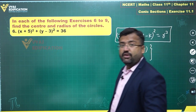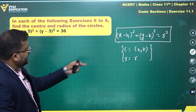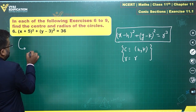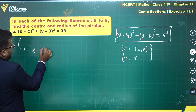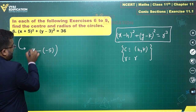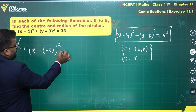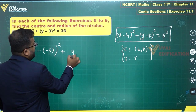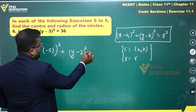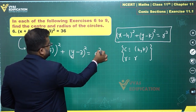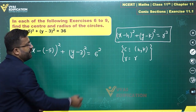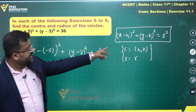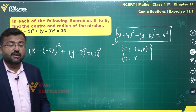Let's try to arrange this particular equation in that form. As you have over here, this can be written as (x minus of minus 5) squared plus (y minus 3) squared is equal to 36, which is actually 6 squared. So you have written the complete equation in the standard form of a circle.